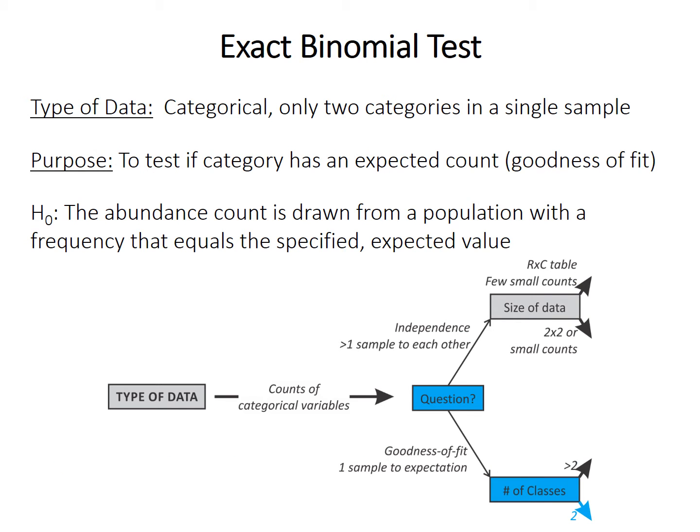The test we can use to answer this question is called the exact binomial test. You use it on categorical data in the case where you have only two categories in a single sample. In the example, the two categories are the two hemispheres — northern or southern — and our single sample is the moon with 200 craters. We're testing if the categories have the expected count, with a null hypothesis that the sample's count comes from a population with a frequency equal to the expected value — in our case, 50% or 0.5.